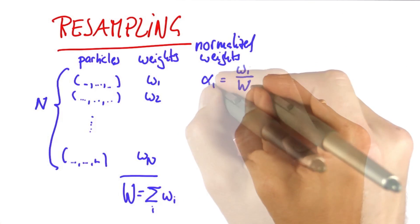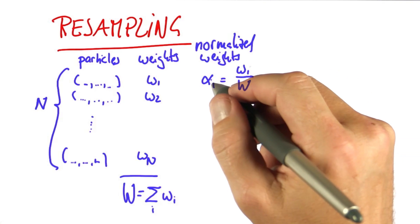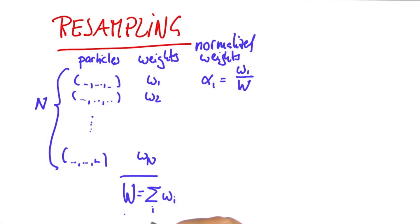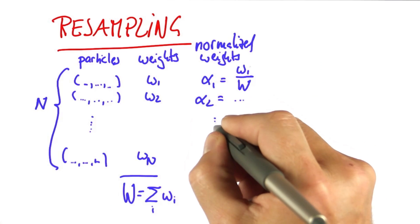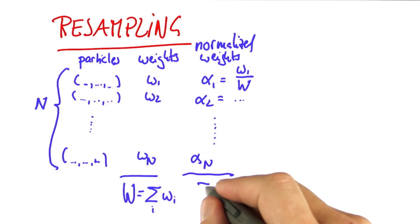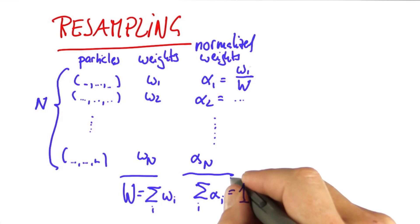Let's call the normalized weights alpha. So alpha 1 would be the weight 1 divided by the normalizer W, and so on all the way to alpha n. And obviously, it goes without saying that the sum of all alphas is now 1 since we normalized them.